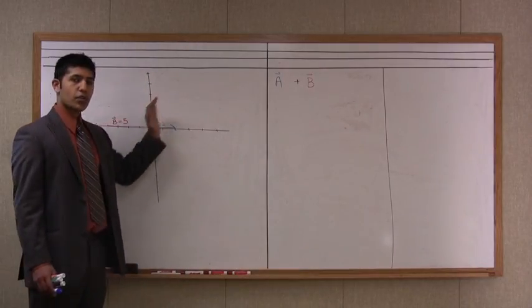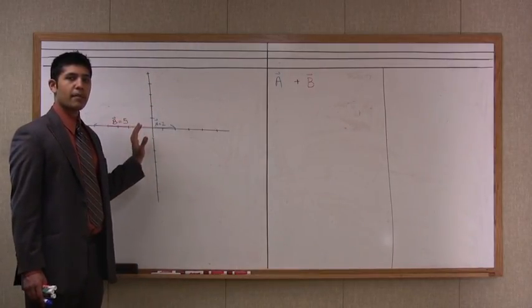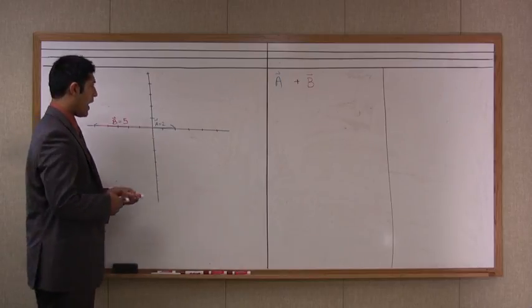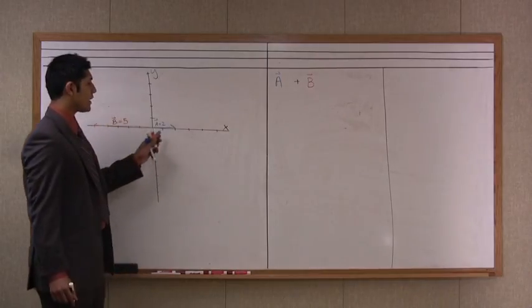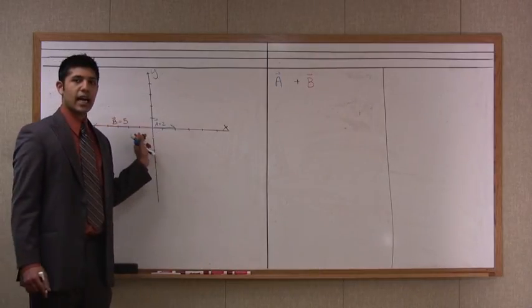So on this diagram I have a two-dimensional diagram here. We have a y-axis and we also have an x-axis, and we have two vectors that are lying directly on the x-axis.